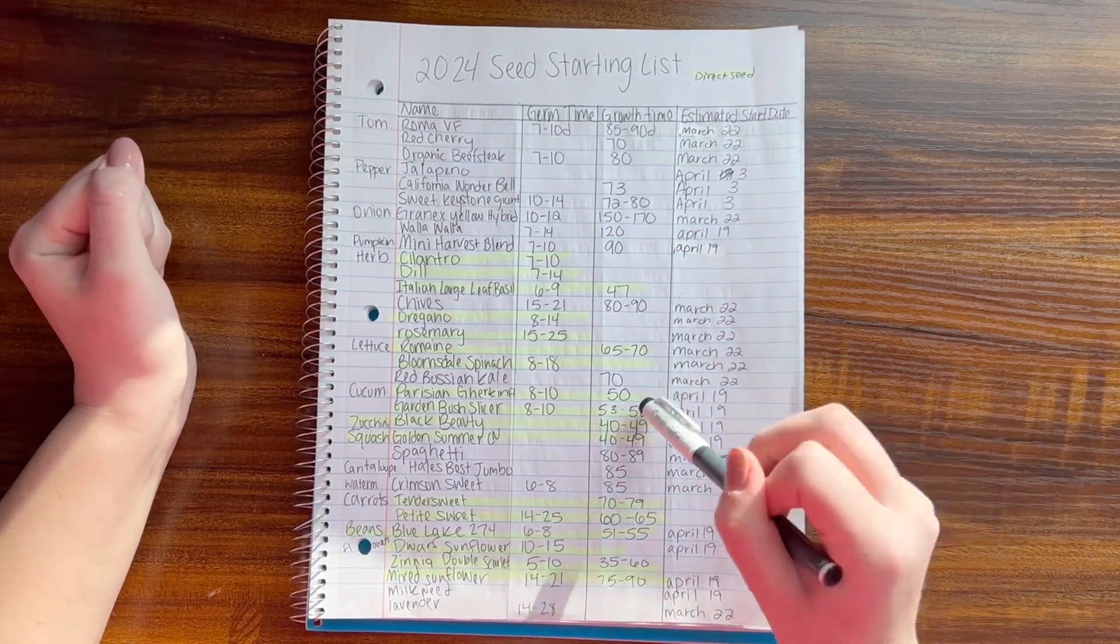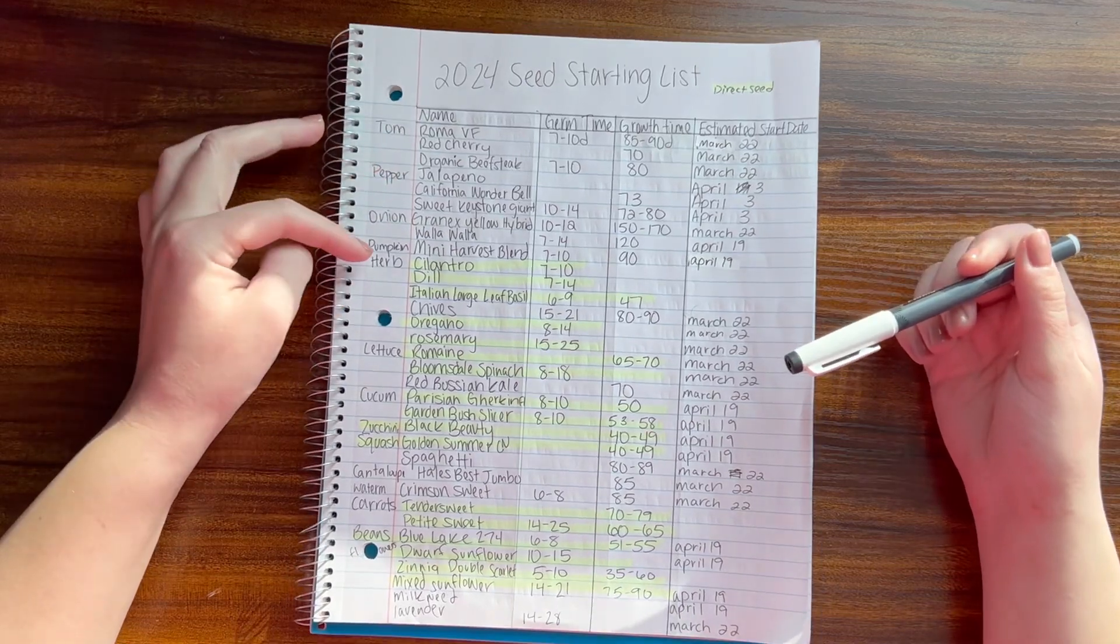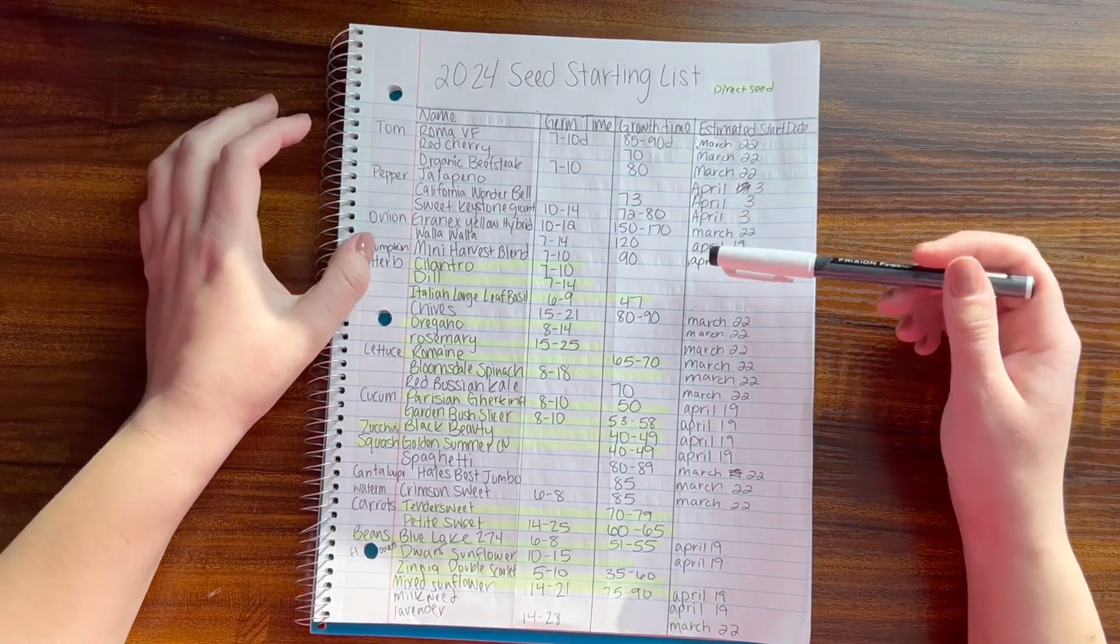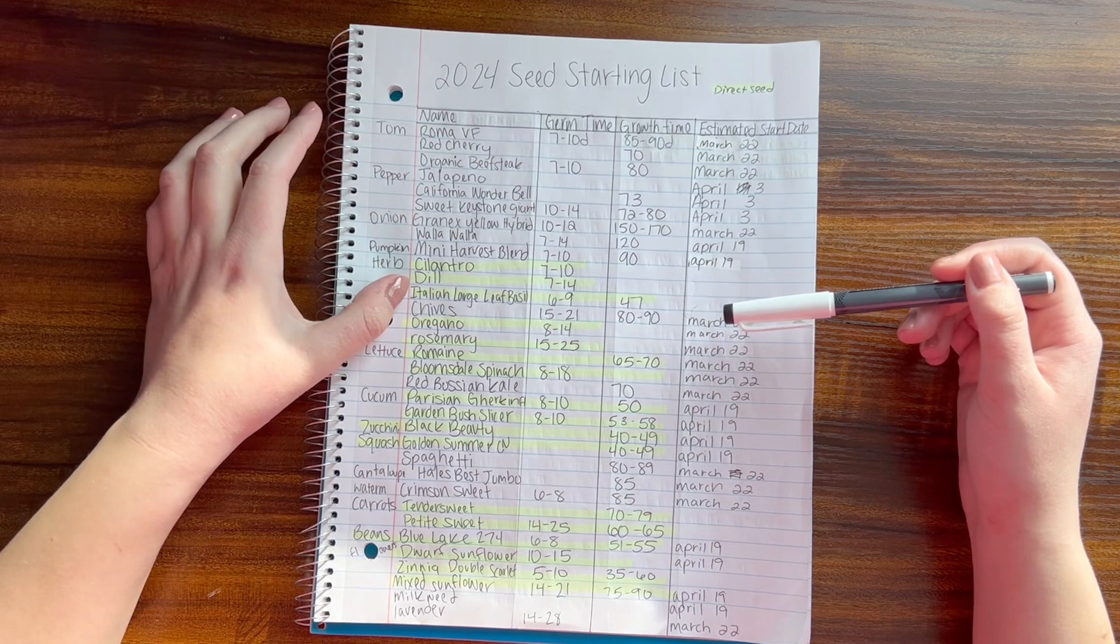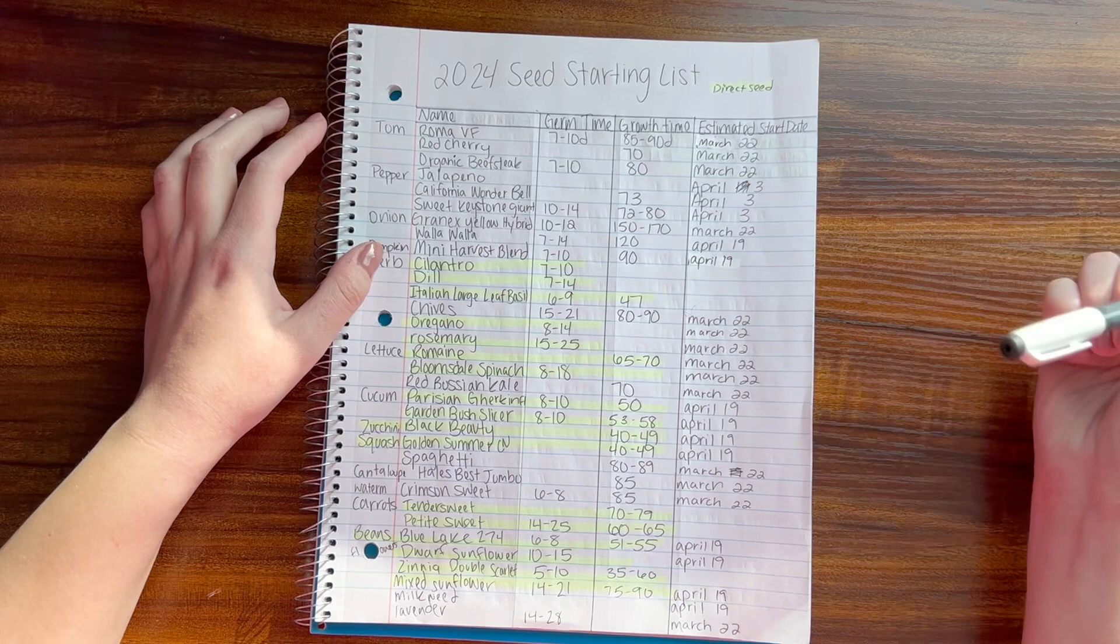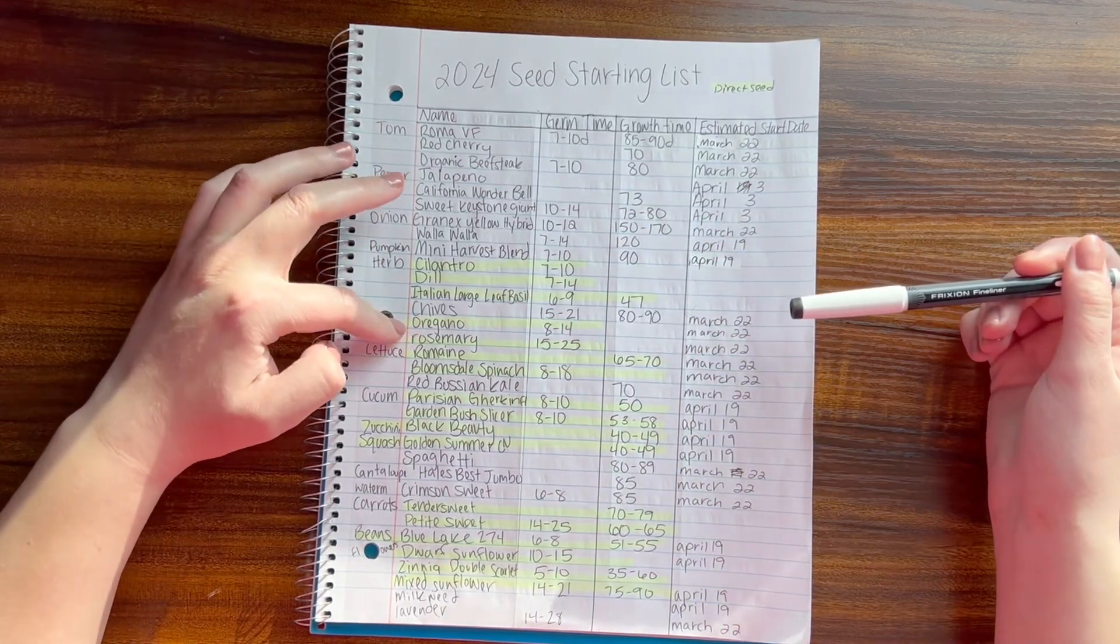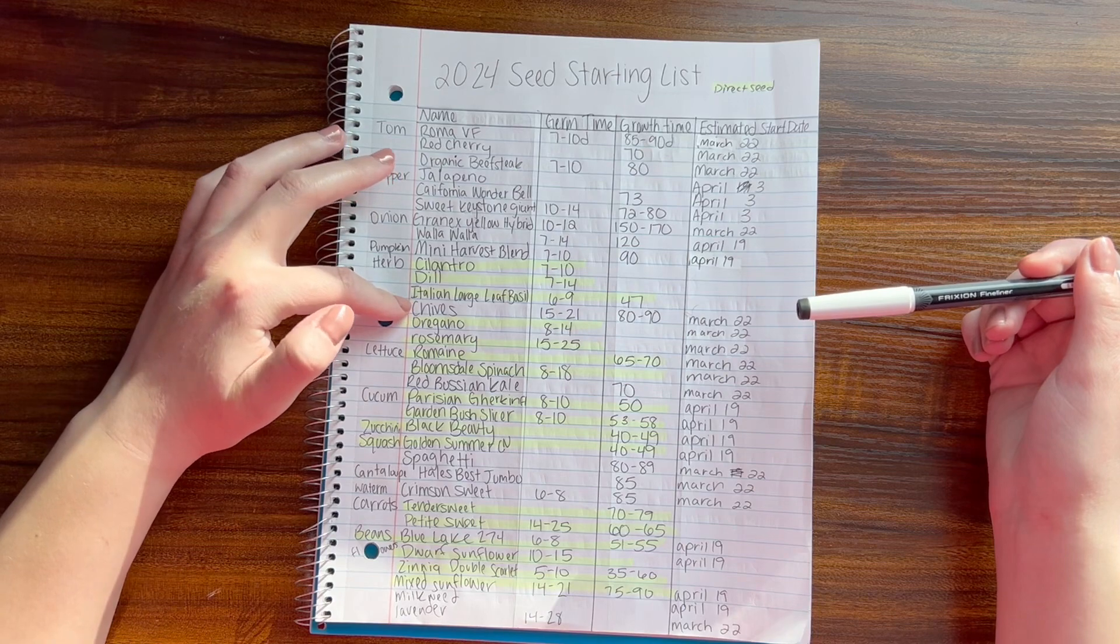Herbs that I am going to direct seed are cilantro, dill, and large leaf basil. I'm going to start some in my Greenstock. I'm going to do some chives, oregano - I might try the chives in my Greenstock as well - and some rosemary. I'm going to start those on March 22nd.